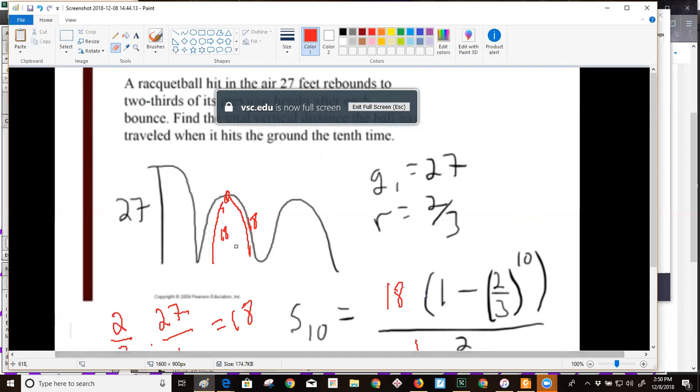I'm going to double that because what I've just done is found the sum of 18, then two-thirds of 18 is 12, then two-thirds of that is 8, and all those sums of the first 10. I'm going to double that 53 to get 106, and I'm going to add in 27 because that's the initial bounce.